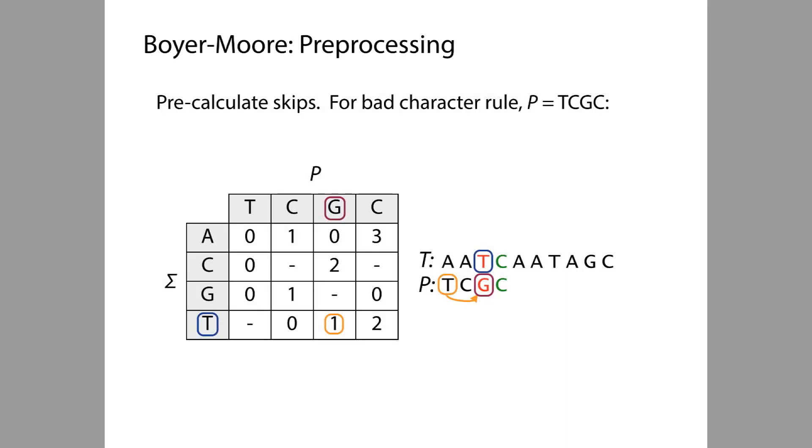So before Boyer-Moore starts to examine any alignments, first we have to build lookup tables for both the bad character rule, like the table that we can see here, and for the good suffix rule.